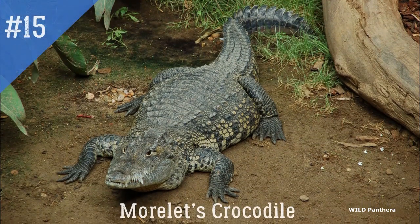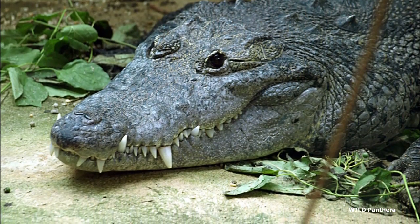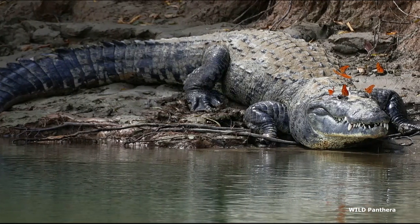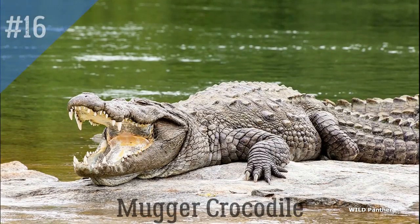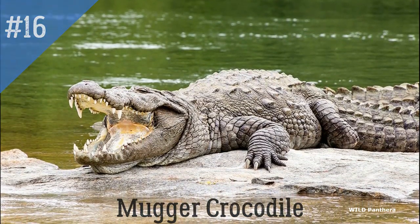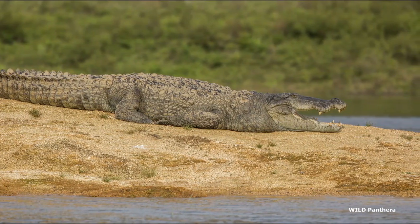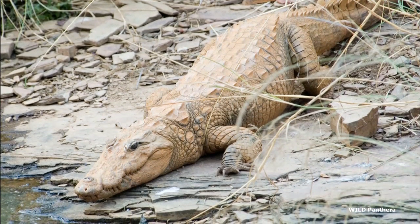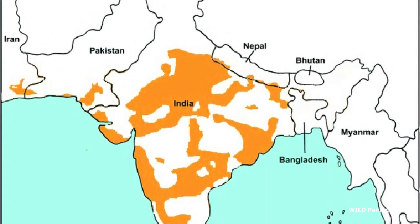14. Morelet's Crocodile — Crocodylus moreletii is a small to medium-sized crocodile with a rather broad snout, found in Atlantic regions of Mexico, Belize, and Guatemala. 15. Mugger Crocodile — Crocodylus palustris is a modest-sized crocodile with a very broad snout and an alligator-like appearance. They prefer slow-moving rivers, swamps, and lakes of the Indian subcontinent.